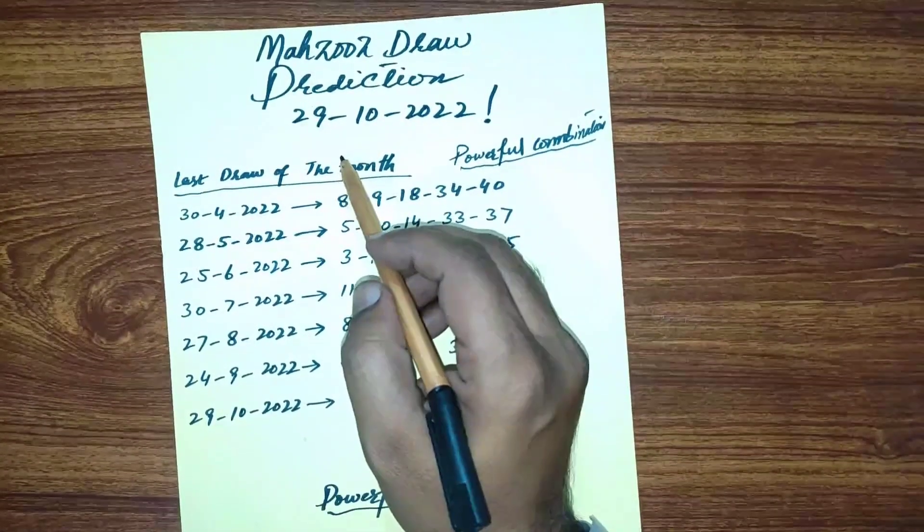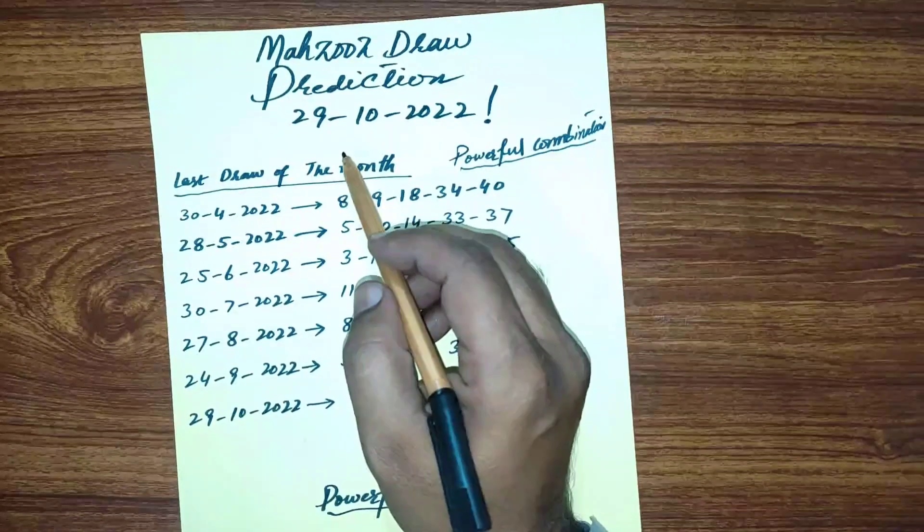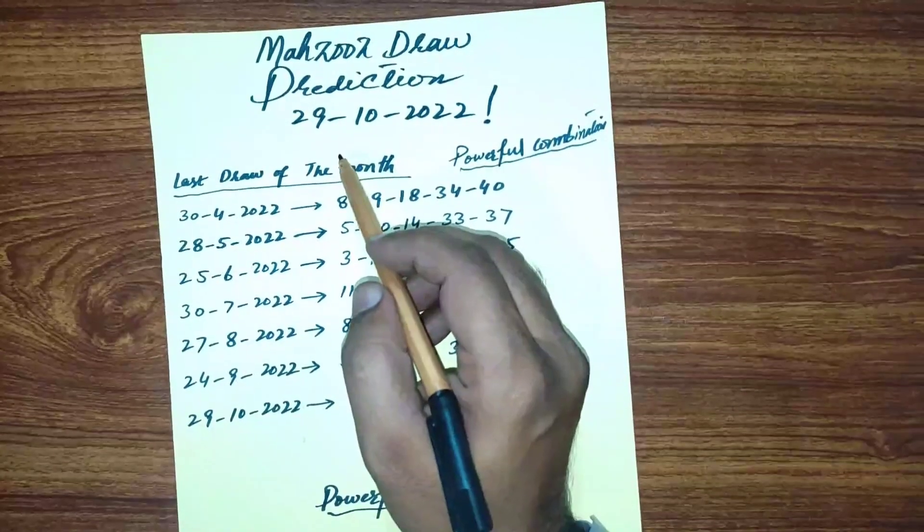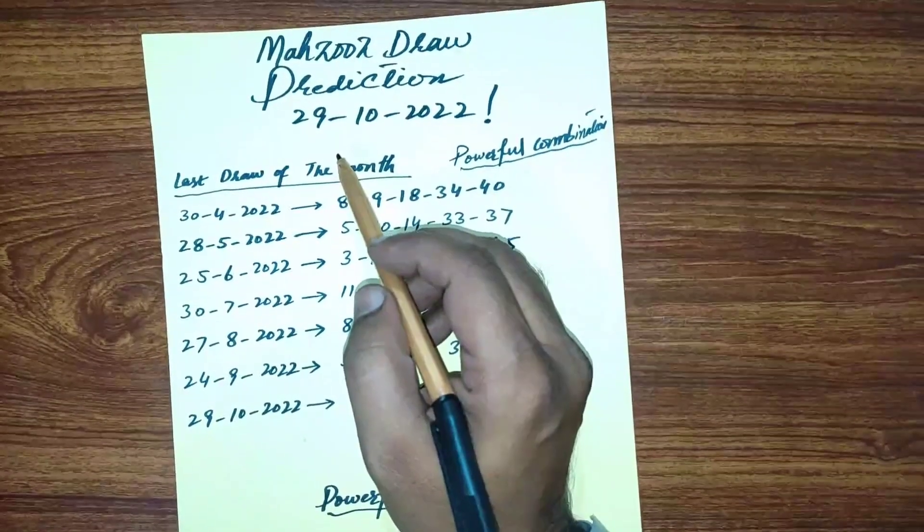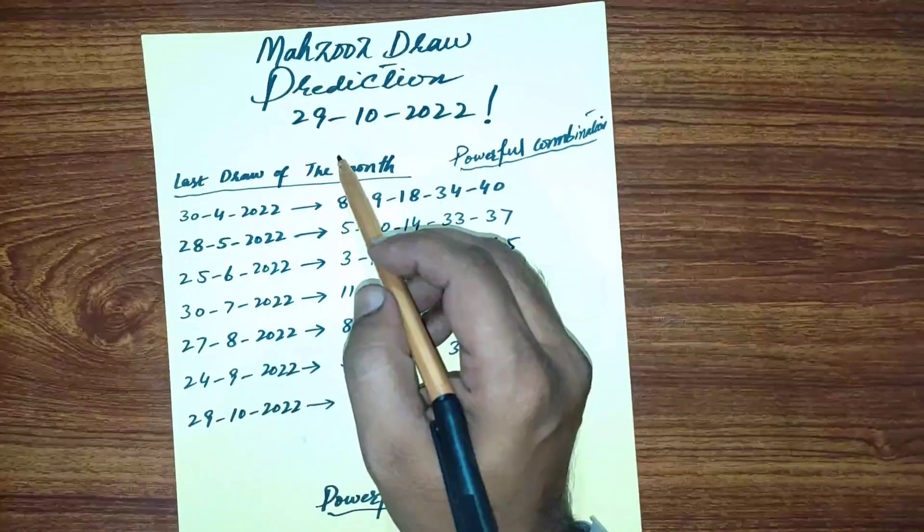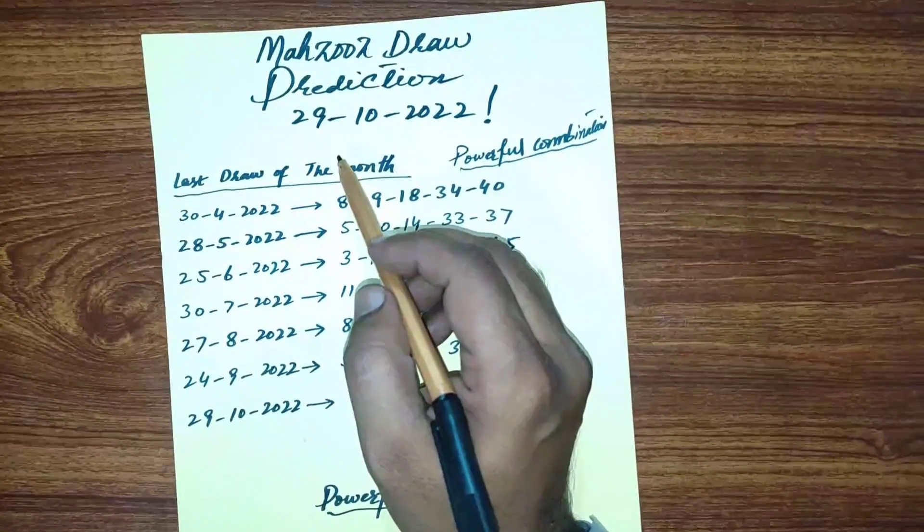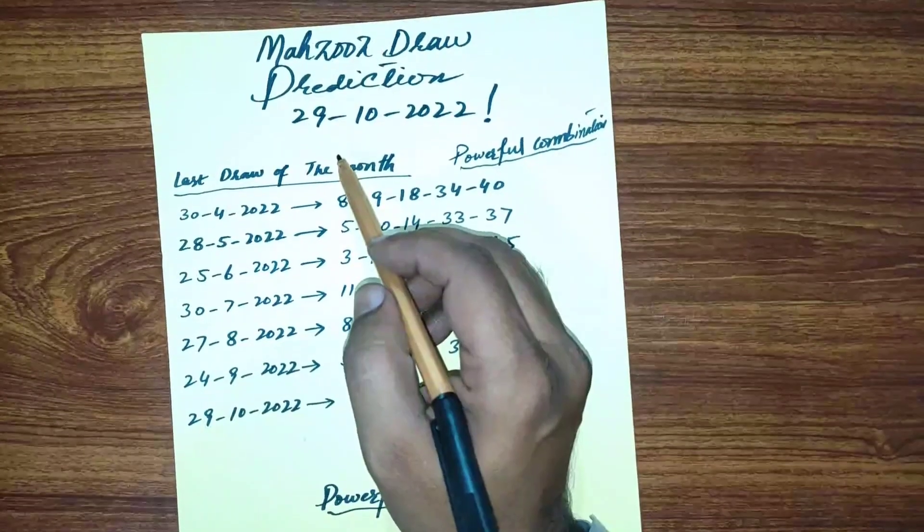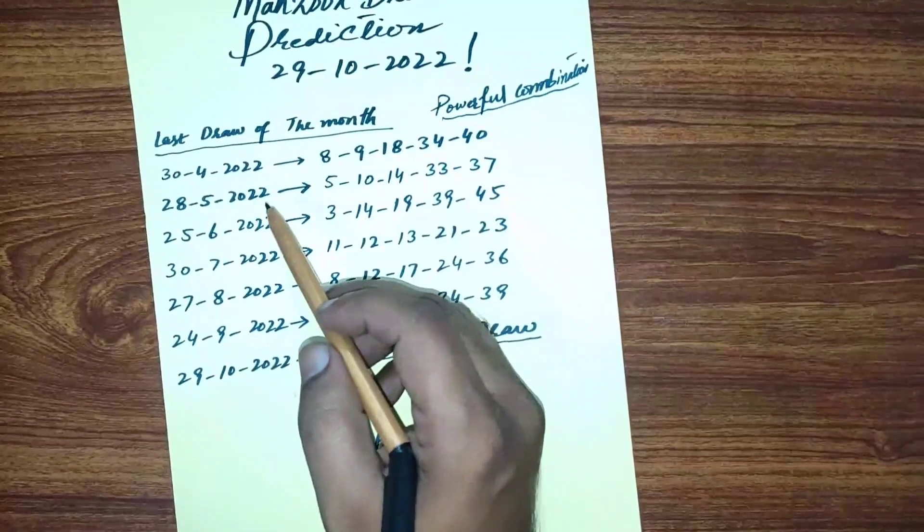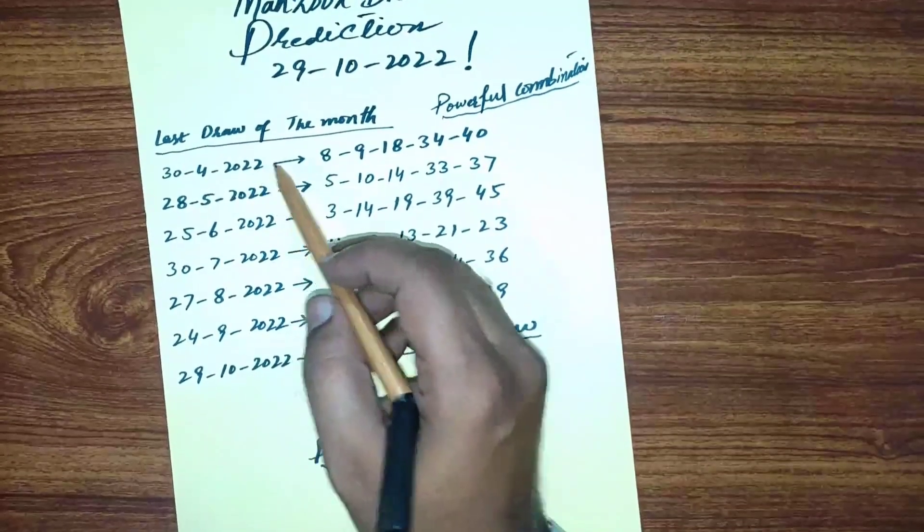And also I will share my powerful numbers. It is my final prediction video for Mahzooz upcoming draw. I want to inform you, our upcoming draw the top prize is double, 20 million dirhams. So try your luck for your better future. I have done hard work for you.